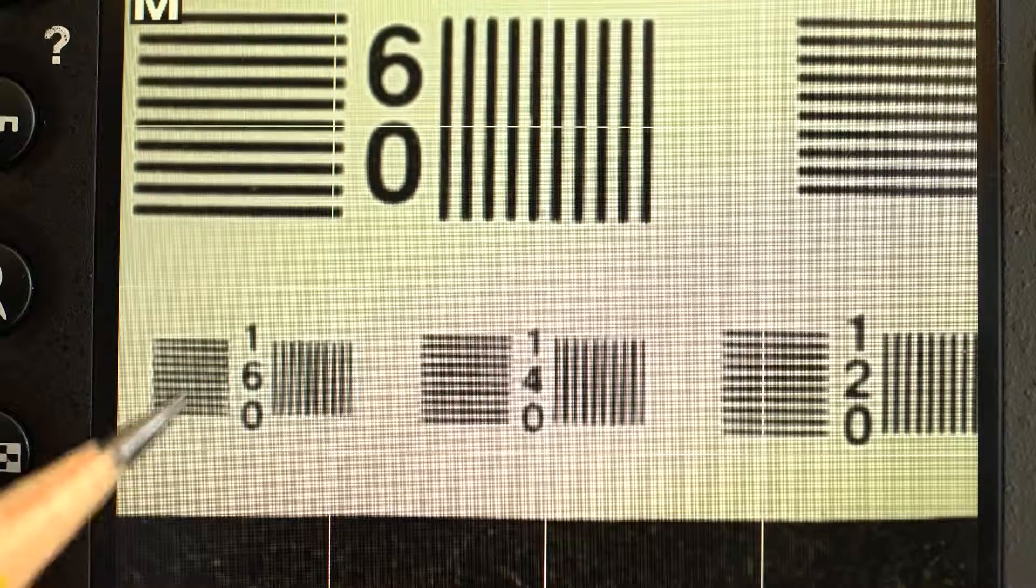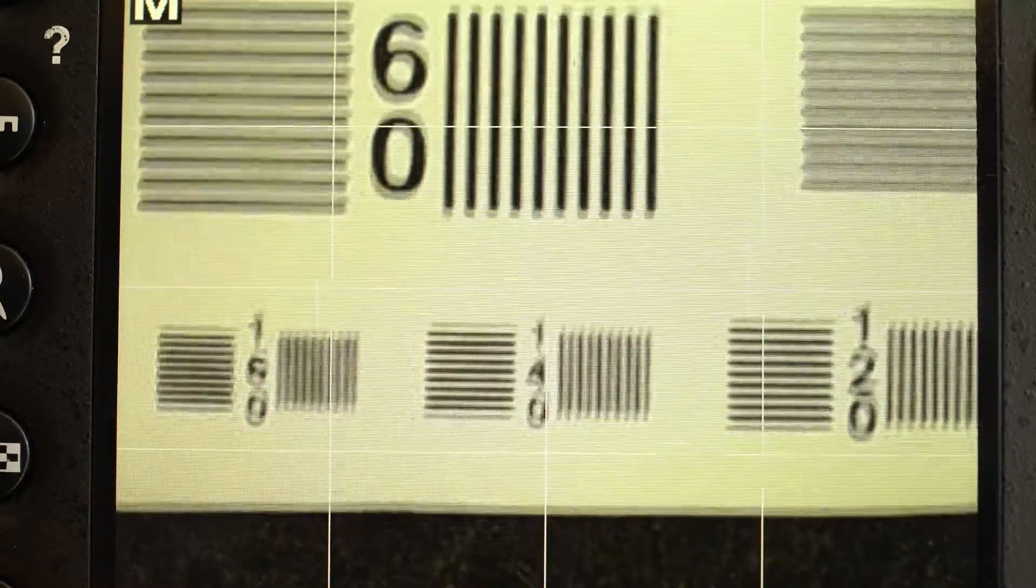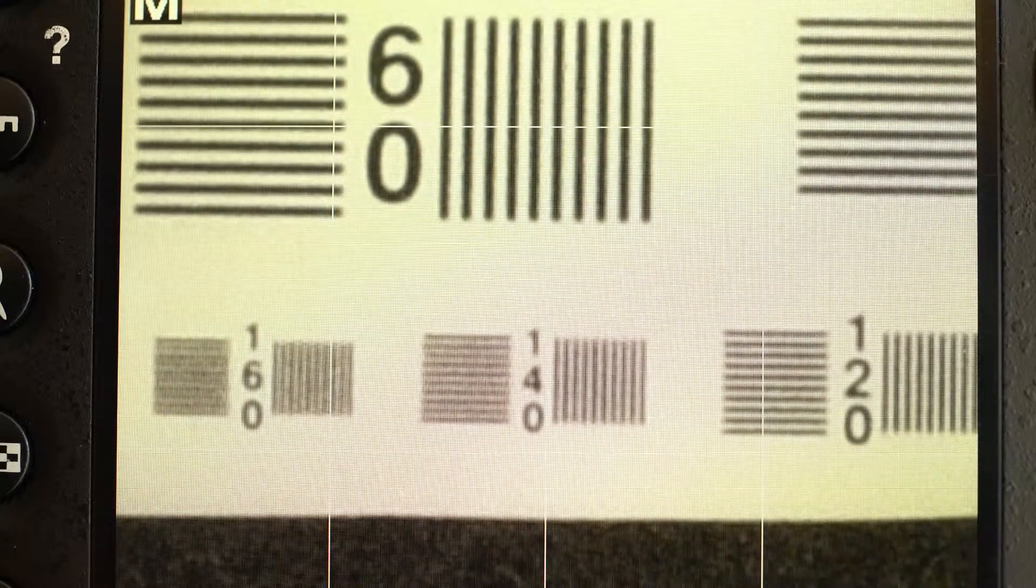Watch these bars in particular. And now we'll go to f22. You can see it all gets kind of gray and you start to lose detail.